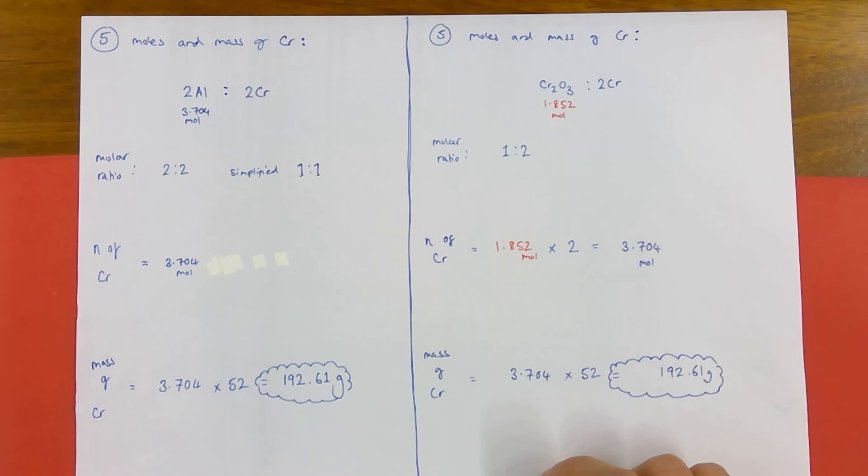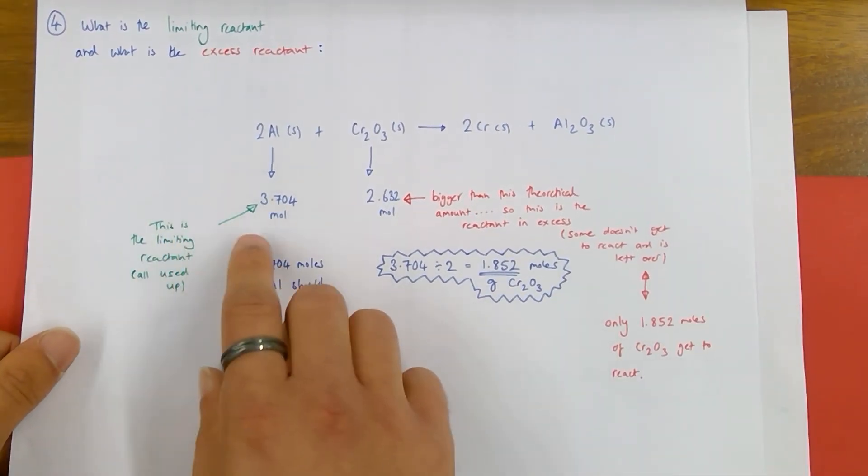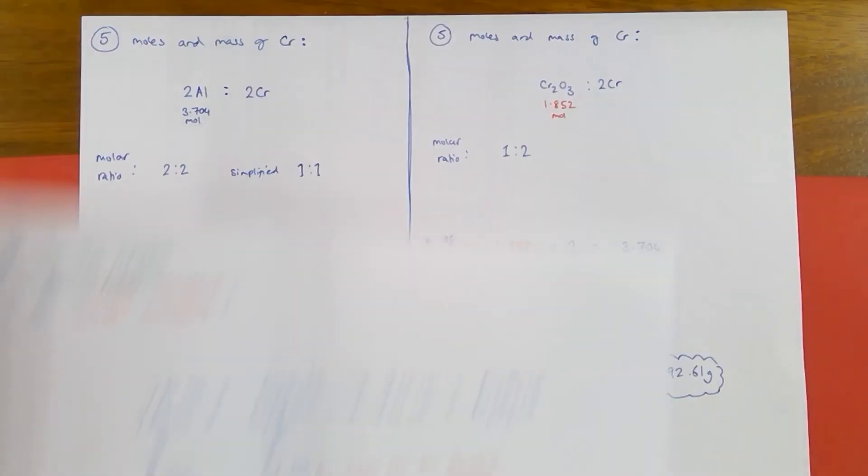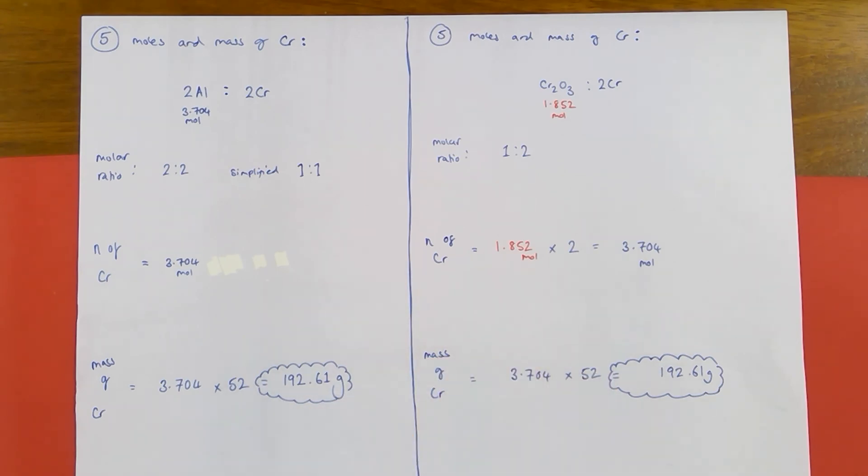So the mass of chromium is 3.704 times the relative atomic mass of chromium, which is 52, giving me 192.61. So it didn't matter which of the two values I used, either this one or this one, they both give me the same answer because the molar ratios are creating that predictable pattern, if you like. So that is a reasonably simple limiting reagent and excess reagent practice question.